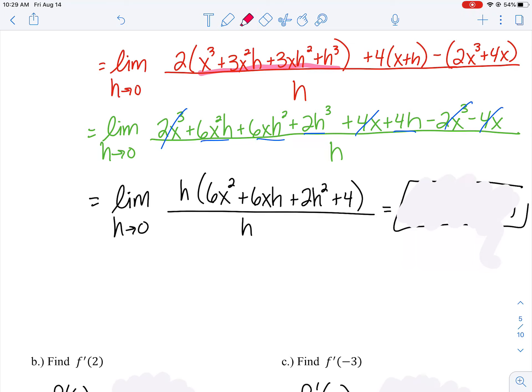When I factored out h, that left me with 6x², 6xh, 2h², and +4. The h in the numerator and h in the denominator cancel. Now I can apply the limit.